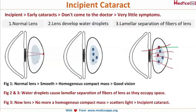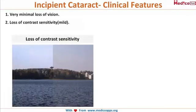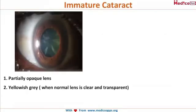Light rays get scattered when they pass through the lens — this is the stage of incipient cataract. The clinical features include very minimal loss of vision, mild loss of contrast sensitivity — you can compare the two images shown — and very mild diplopia. These are the only symptoms at this stage.